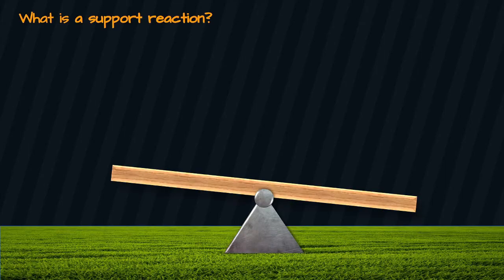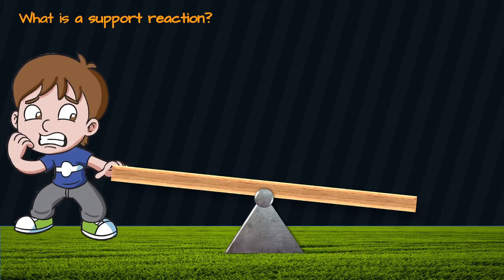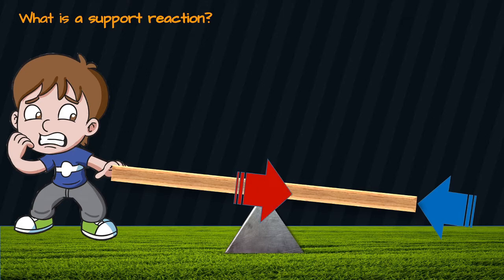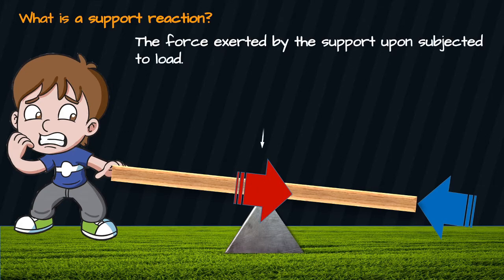So what is a support reaction? Remember the person pulling the seesaw plank? If the mechanism attached at the center prevented the plank from separating, then we can conclude that it reacts on the pulling force. If the mechanism is the support, then the force that it exerted is the support reaction. Support reactions are usually assumed to be opposite in direction of the subjected load as we draw it in the free body diagram.